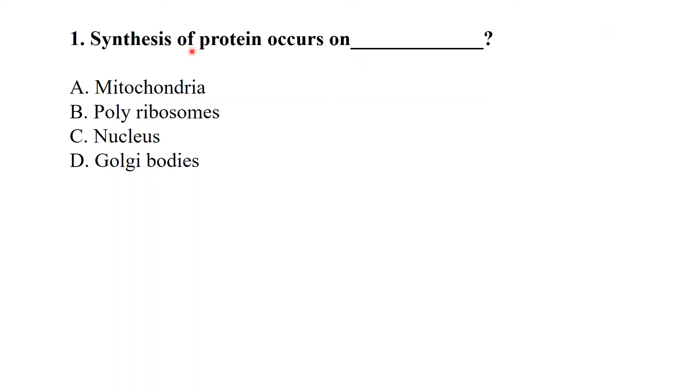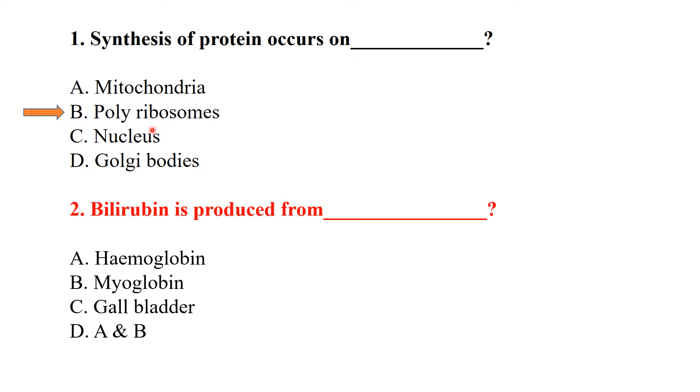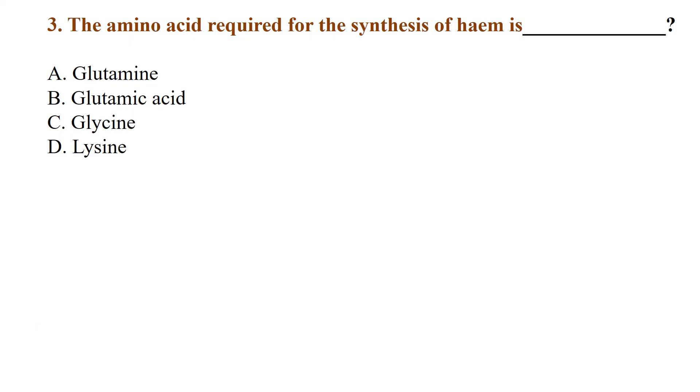Starting with MCQ number one: Synthesis of proteins occurs in polyribosomes. Ribosomes are the protein synthesis machinery. MCQ two: Bilirubin is produced from both hemoglobin and myoglobin. MCQ three: The amino acid required for the synthesis of heme, which is part of hemoglobin, is glycine. This is the most important amino acid required for the synthesis of heme.